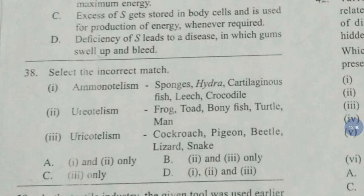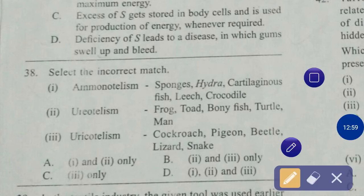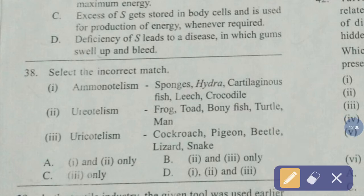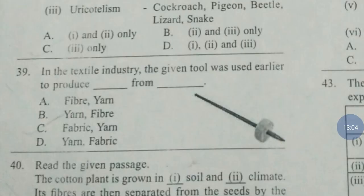Question number 38. Select the incorrect match. First: ammonotelism — sponges, hydra, cartilaginous fish, leech, crocodile. Second: ureotelism — frog, toad, bony fish, turtle, man. Third: uricotelism — cockroach, pigeon, beetle, lizard, and snake. The correct answer is option number A — first and second only.